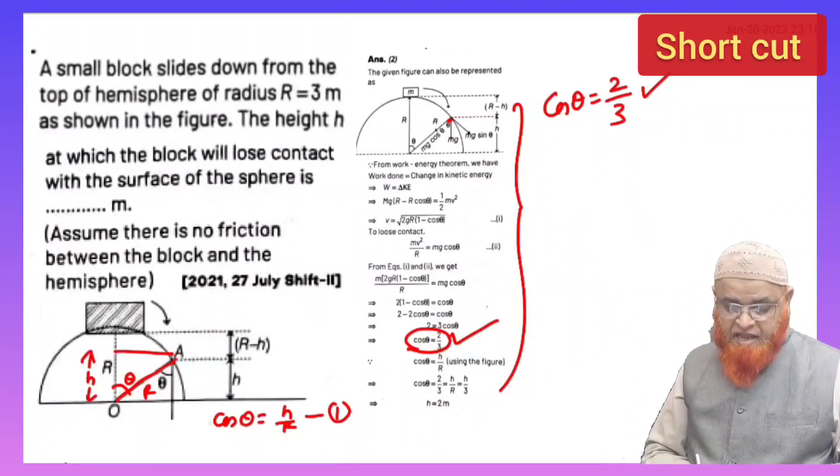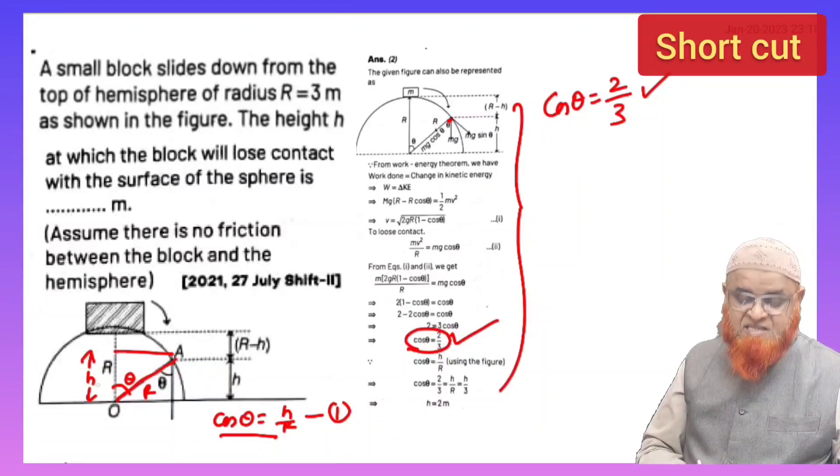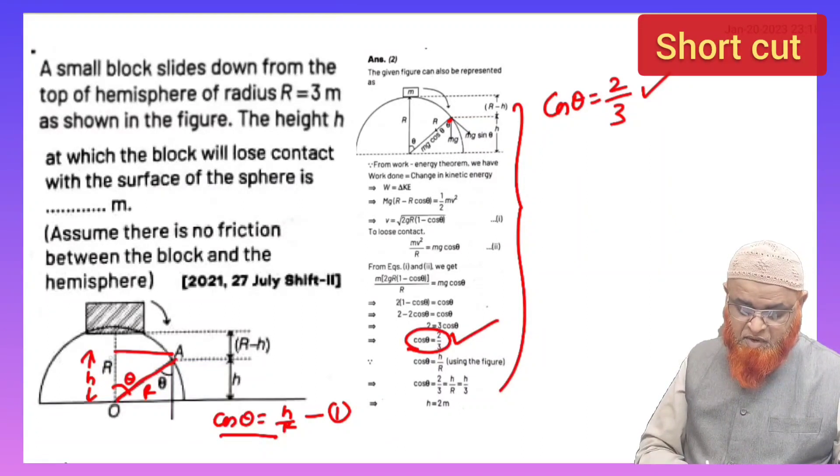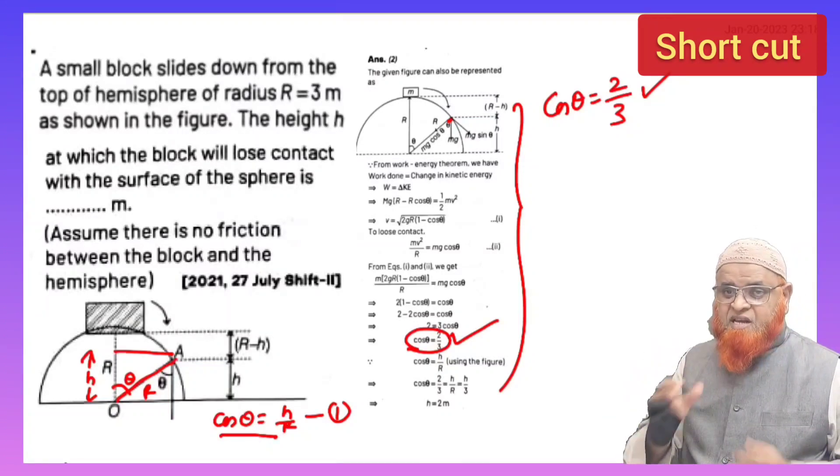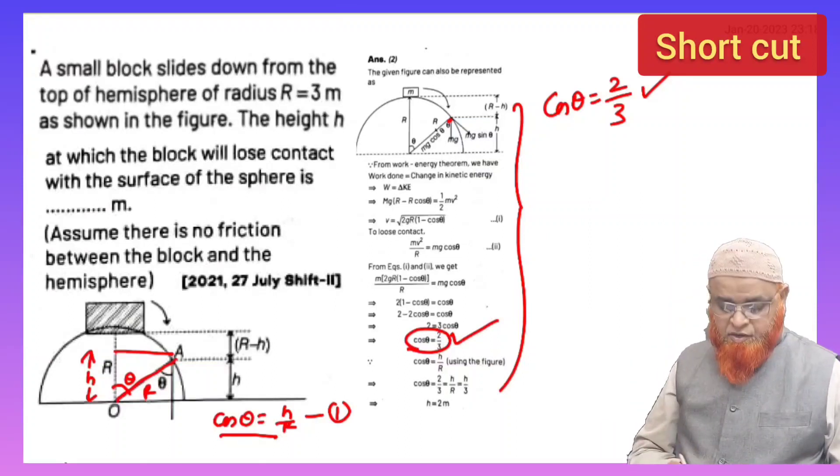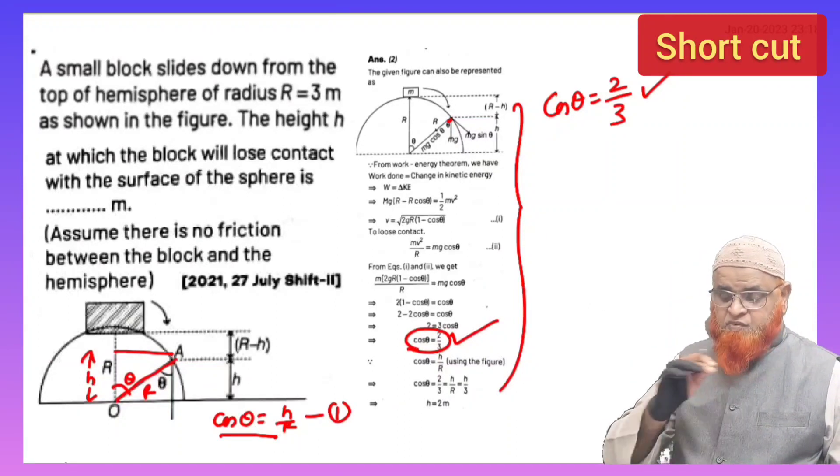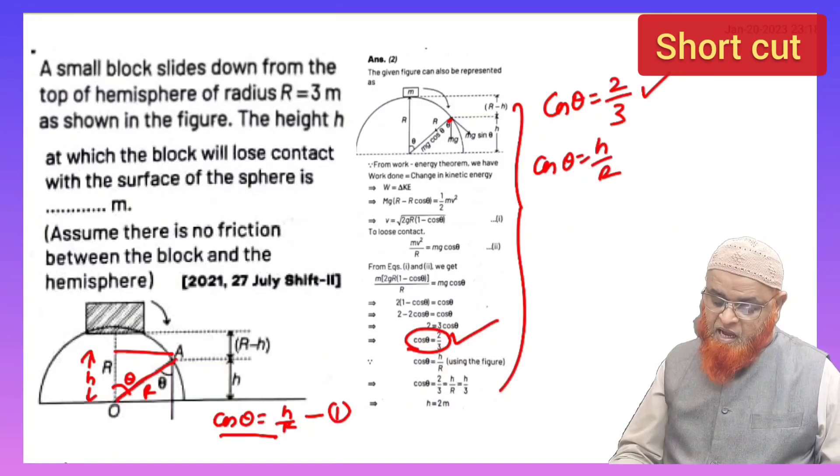And the next thing is here, from the diagram if you observe, cos θ is equal to h by r. Cos θ, h is nothing but the height from bottom from where the block has been disconnected from the hemispherical bowl, and hypotenuse is going to be the radius of the hemispherical bowl.